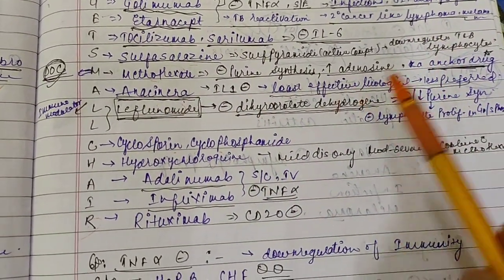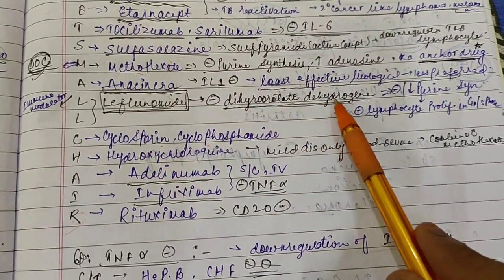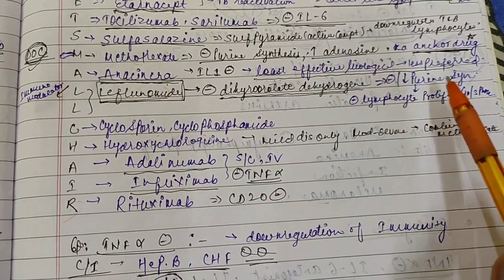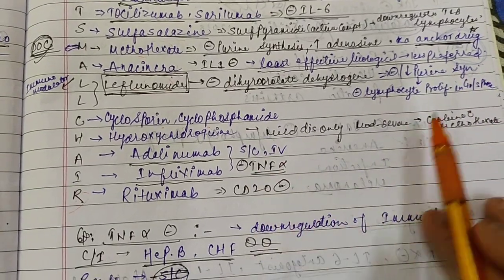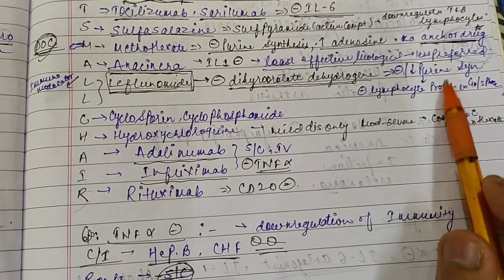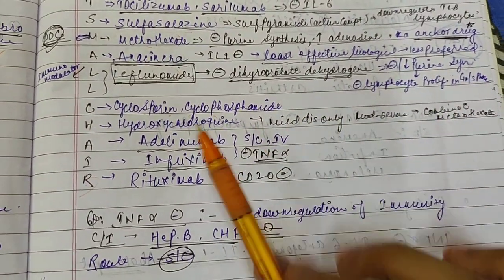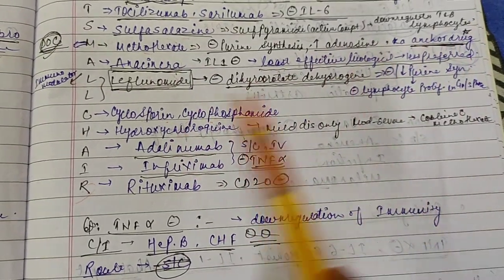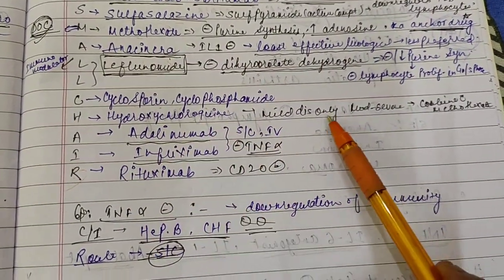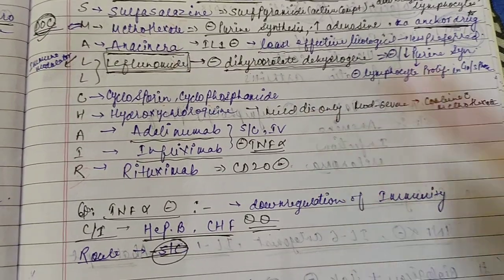Then Lefumumide. It inhibits dihydro-orotate dehydrogenase, so it decreases your purine synthesis, and by dictating purine synthase it inhibits lymphocyte proliferation. Then Cyclosporine, Cyclophosphamide we have discussed. Hydroxychloroquine, it is for only mild cases.